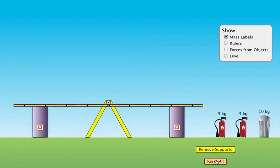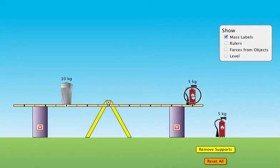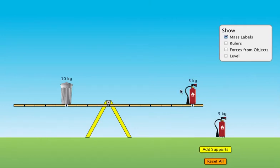I can balance this even though the masses aren't the same. So I can put the 10 kilogram trash can back at the 2 meter mark, the 5 kilogram trash can at the 4 meter mark, and when I remove the supports, it will remain balanced.